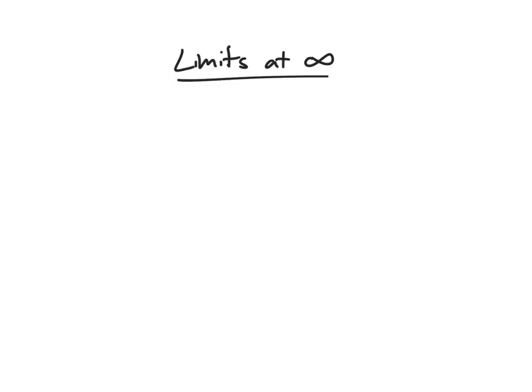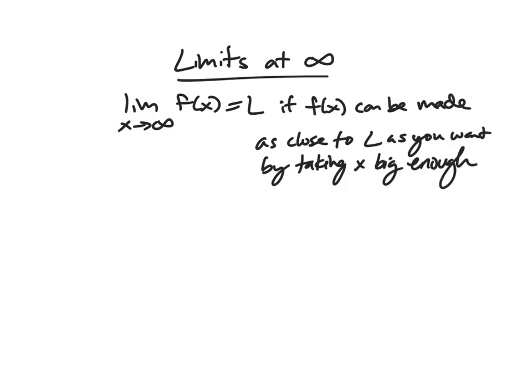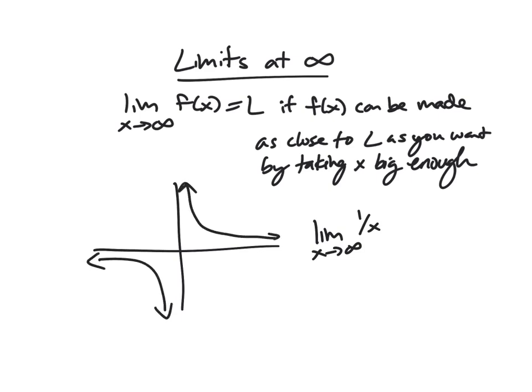So we just got done discussing limits that end up at infinity. Here, we're going to take limits as our x value, not our y value, approaches infinity. So we say that the limit as x approaches infinity of f(x) is L if f(x) can be made as close to L as you want by taking x big enough. So what do we mean by this? Well, I'm going to look again at 1 over x, but this time we're going to go not towards 0 and off to infinity, but toward infinity on the x-axis and toward 0.